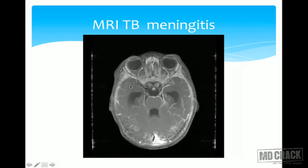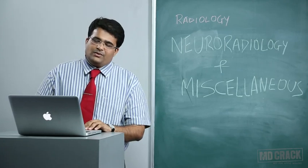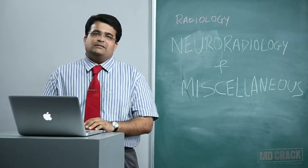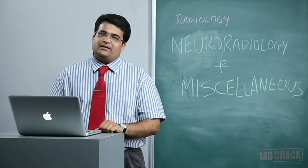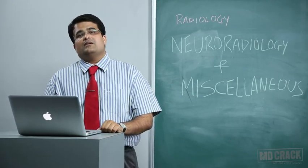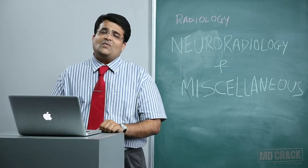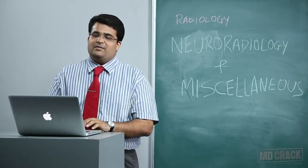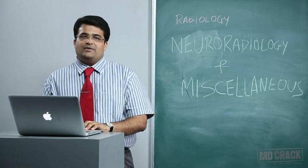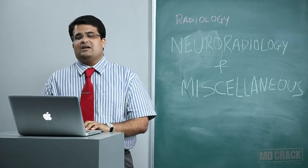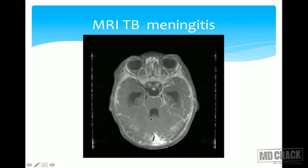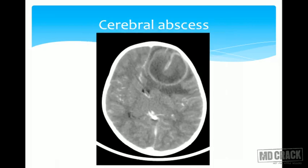In tuberculosis meningitis, plain CT evaluates the complications — hydrocephalus, infarcts, and granulomas. Post-contrast CT or MRI typically shows enhancement of the meninges in the basal cisterns and granulomas within the parenchyma. These granulomas may appear as ring-enhancing lesions and can mimic tumors.